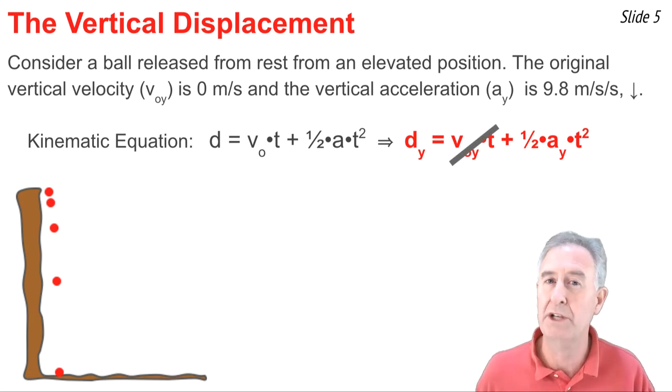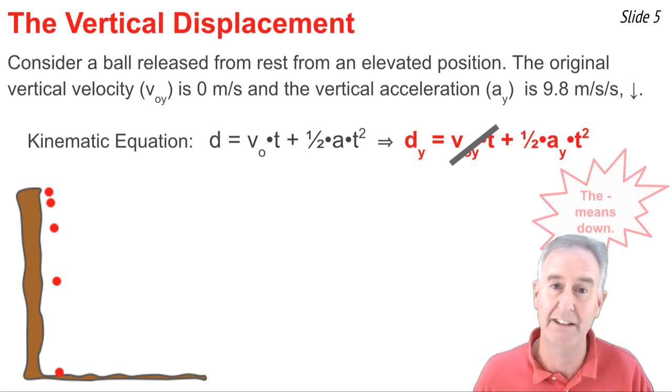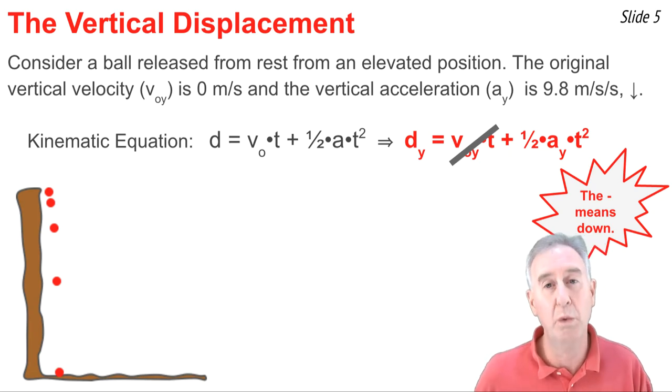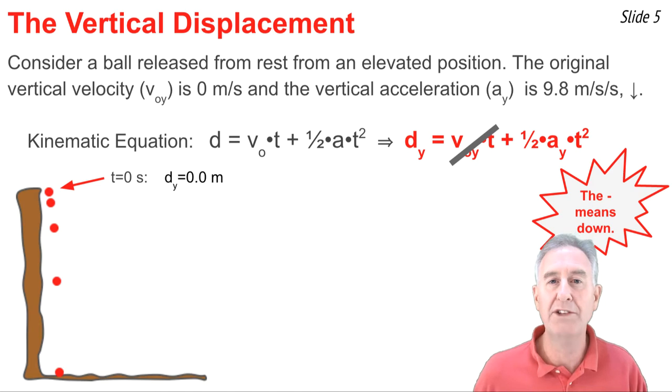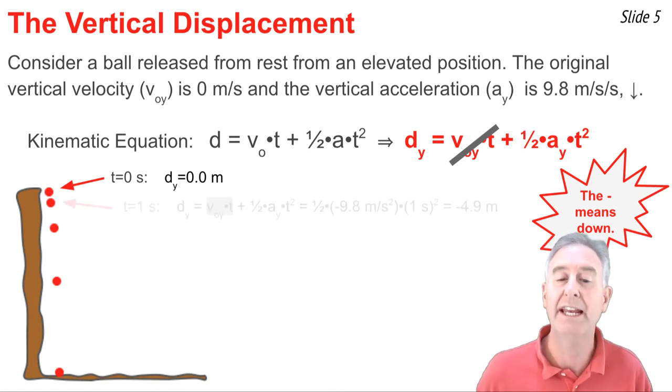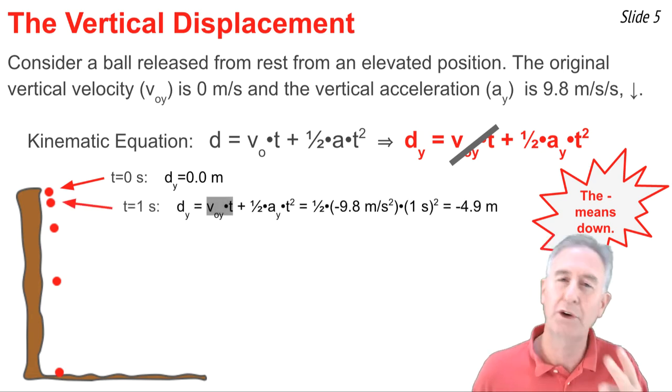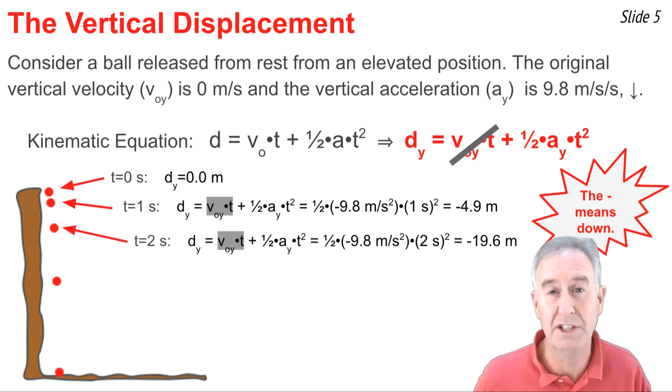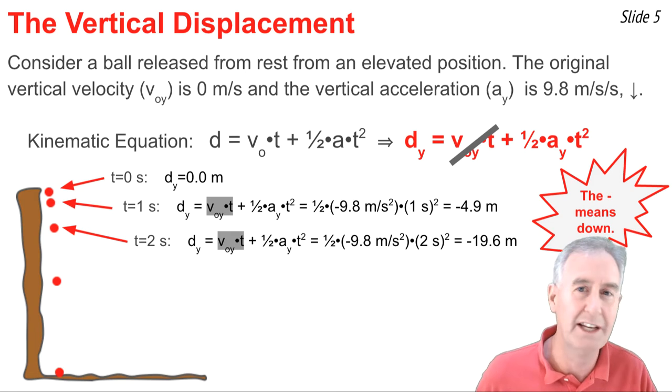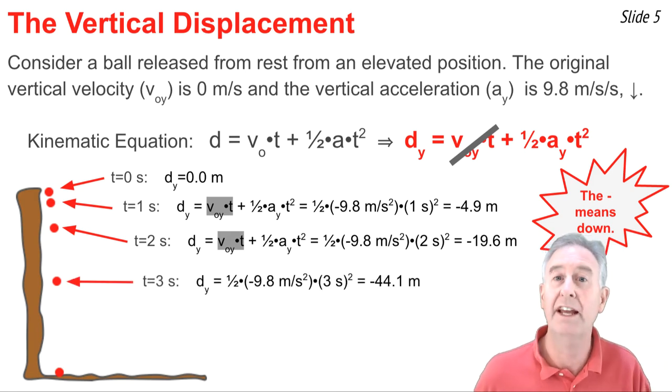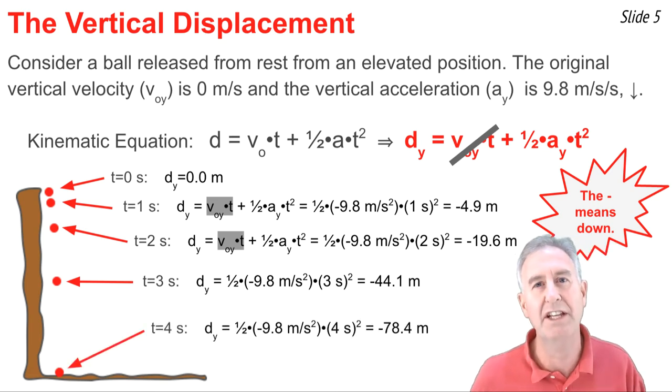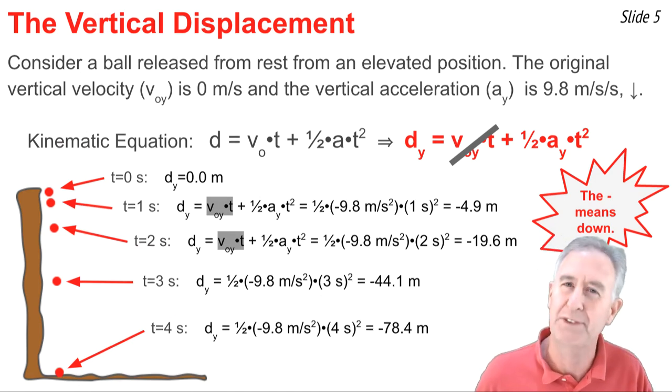And the a_Y is 9.8 m/s² down or negative 9.8. I can use this equation for vertical displacement to calculate the vertical displacement at 1, 2, 3, and 4 seconds. For one second, I just have to substitute the value 1 into that equation for T and square it. And I end up getting negative 4.9 meters. For two seconds, I substitute 2 into the equation, square it, and I end up getting negative 19.6 meters. For three seconds, I repeat the process with T equal 3, and I get negative 44.1. And for four seconds, I can use this special equation and get negative 78.4 meters for a four-second vertical displacement.